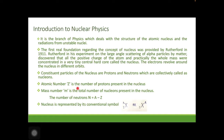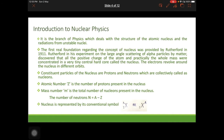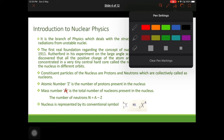The mass number A is the total number of nucleons present in the nucleus. The number of neutrons N is equal to A minus Z. We represent the nucleus by its conventional symbol — X with Z written below and A written above, for example, helium is represented as ₂He⁴, with Z = 2 and A = 4, meaning two protons and two neutrons.